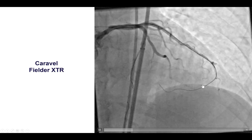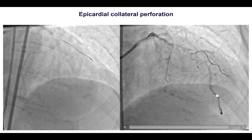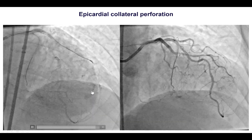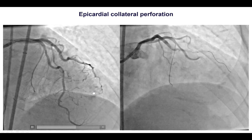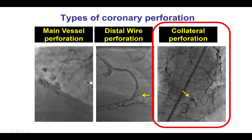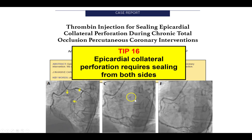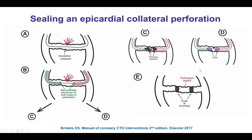Unfortunately, the XTR wire didn't quite follow the course of the vessel, and when we took a picture, we saw that we now had an epicardial collateral perforation with staining around the serum. The good news is that the patient did not have previous bypass surgery, which makes loculated effusion less likely. However, the bad news is that epicardial perforations — especially of an epicardial collateral — are tough to treat because one wants to get access from both sides and coil or use thrombin at both sides of the perforation. To treat the side facing the occluded vessel, one has to recanalize the CTO first, and at this point we had not recanalized the CTO. This is challenging because we cannot get access to the collateral from the side facing the chronically occluded vessel.